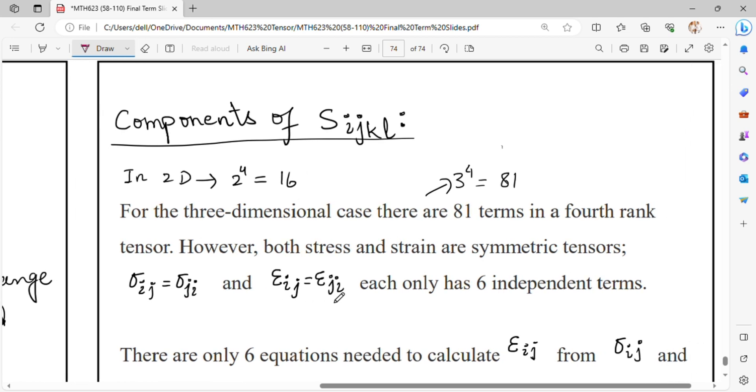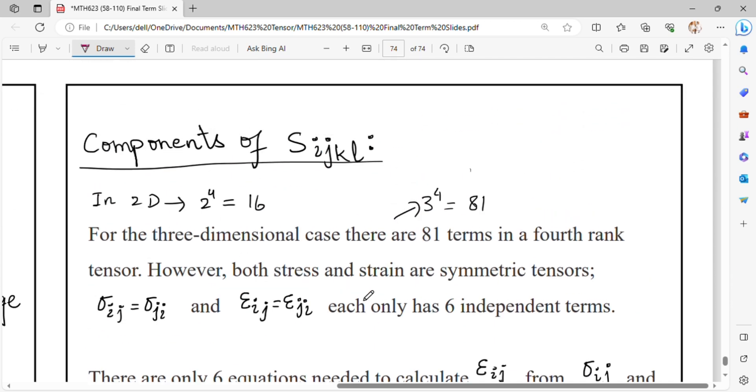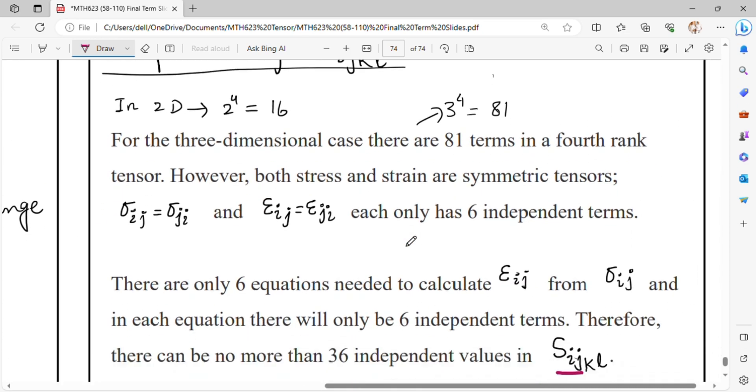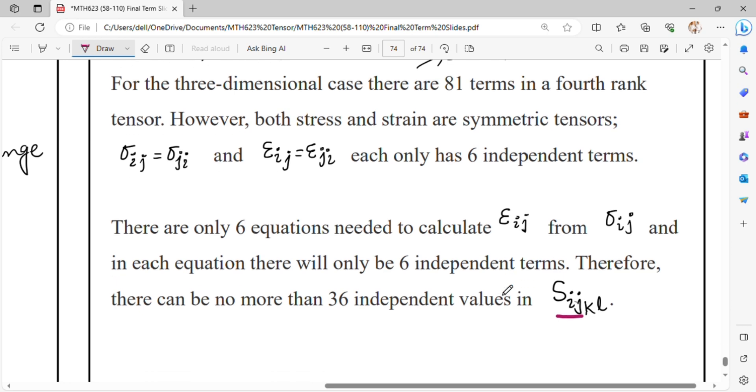In two dimensions, there are 16 components, and in three dimensions, there are 81 terms in a fourth-rank tensor. However, due to symmetry of stress and strain, sigma_ij equals sigma_ji and epsilon_ij equals epsilon_ji, so each has only 6 independent terms. Therefore, there can be no more than 36 independent values in S_ijkl.